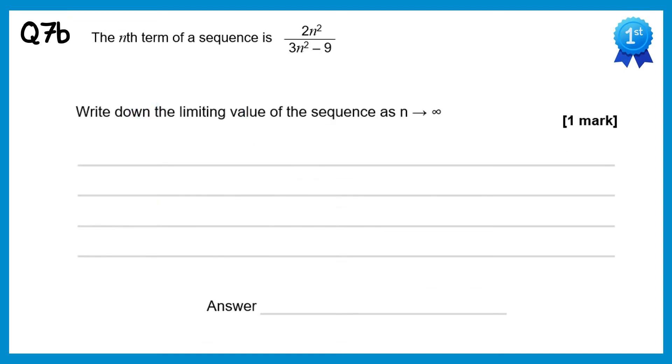For the limiting value we ignore the negative 9 in the denominator, leaving 2n squared over 3n squared. Cancel the n squareds and you get 2 thirds, or 0.6 recurring.